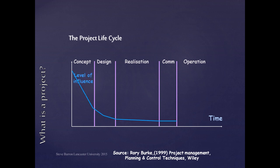Our ability to affect changes to a project significantly decreases during the first two phases. It's relatively easy to modify the project while it's being developed and designed. Once we start to realize or build and produce the project — for example by cutting metal or digging foundations — changes to the project are more difficult to implement.